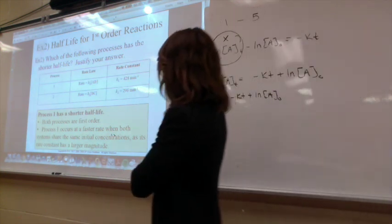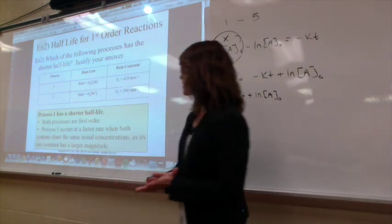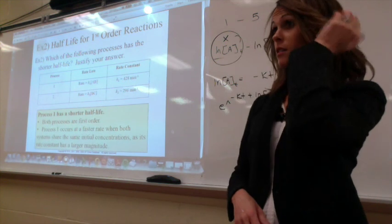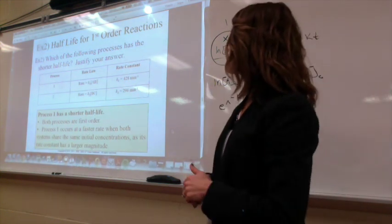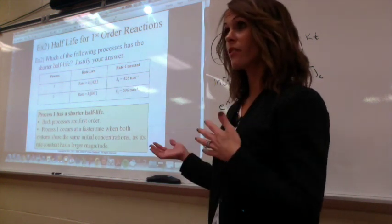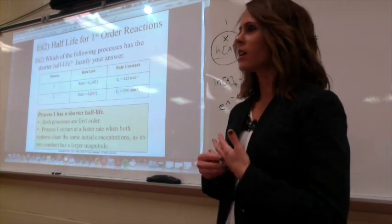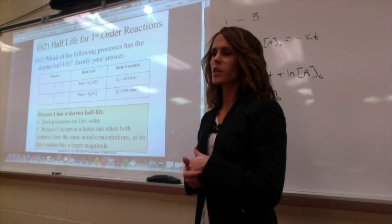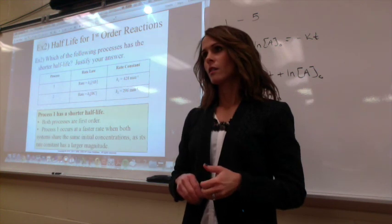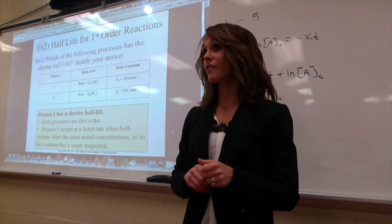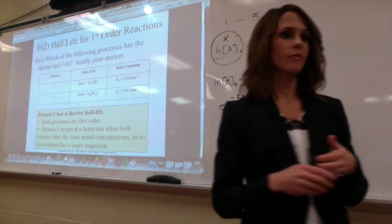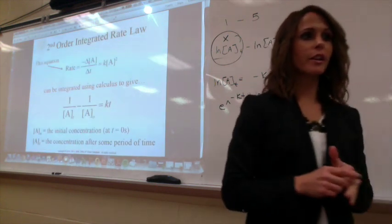Both processes are first order. Process one occurs at a faster rate when both systems share the same initial concentrations, as its rate constant has a larger magnitude. For justification, you could calculate 0.693 divided by both rate constants to show the half-lives explicitly. If you have to write a paragraph comparing two things, you should always discuss both. Almost done with this lecture.